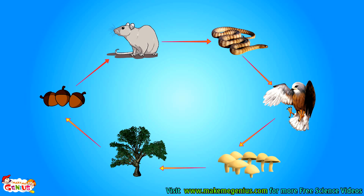Let us see another food chain. Here, a rat eats acorns fruit, which comes from a plant. And a snake eats rats. An eagle eats the rat. The eagle dies. It gets decomposed, and plants use the decomposed nutrients to produce fruit.